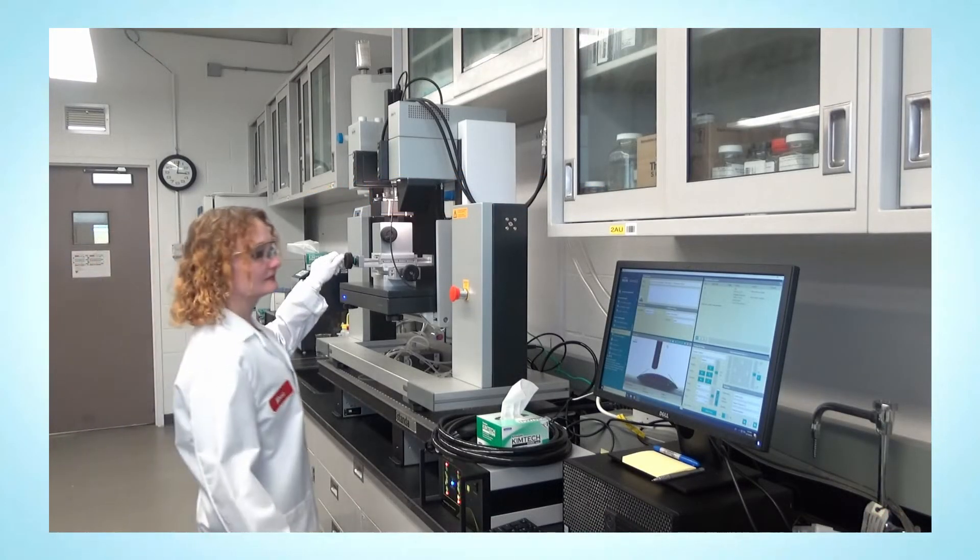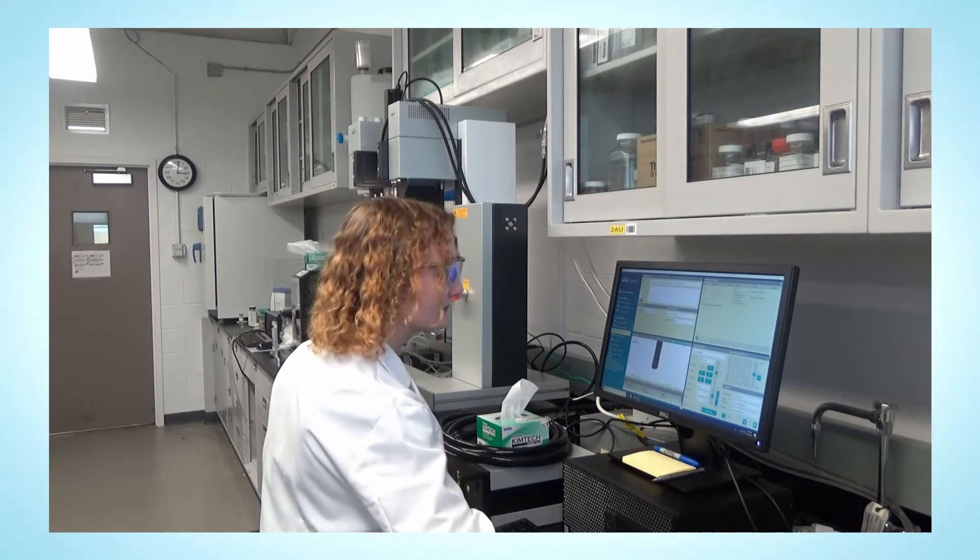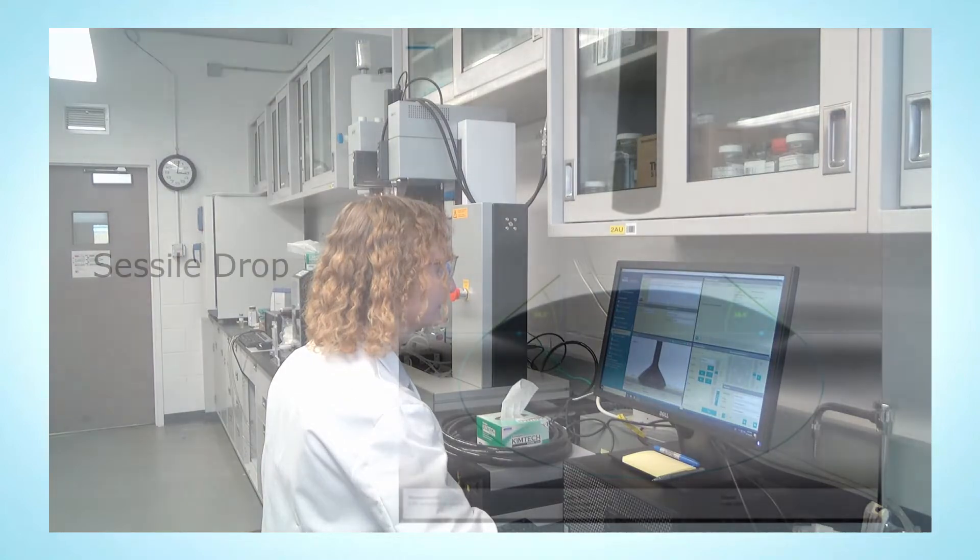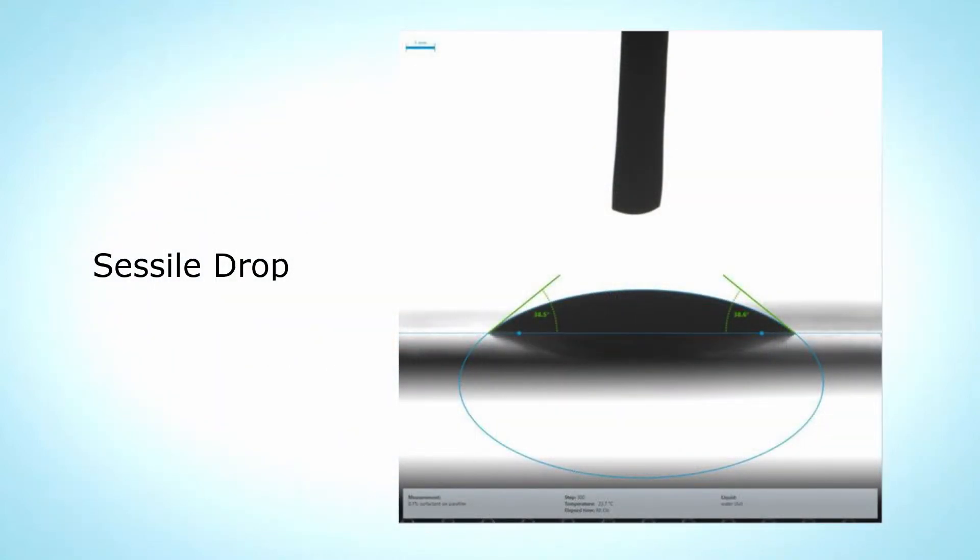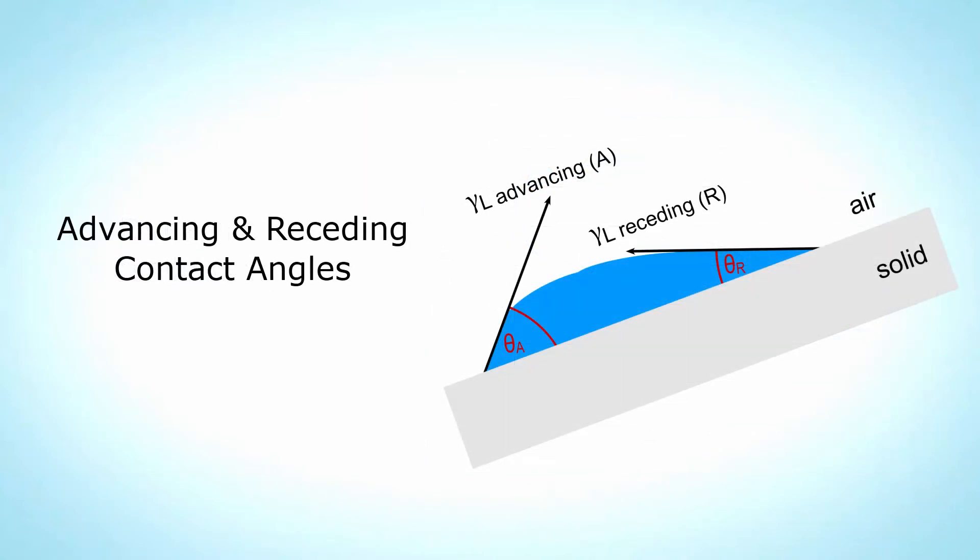There are many different contact angle experiments, and each can help answer formulation or performance questions. Measurements fall into three categories, including sessile drop, dynamic sessile drop, and advancing and receding contact angles.